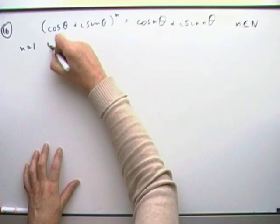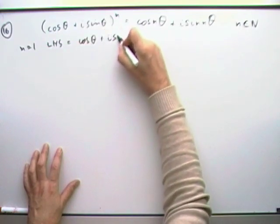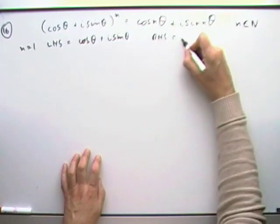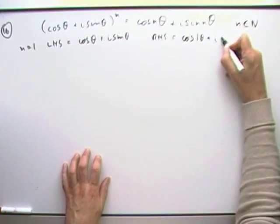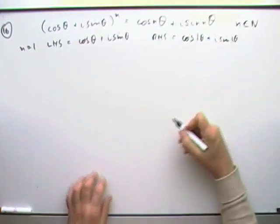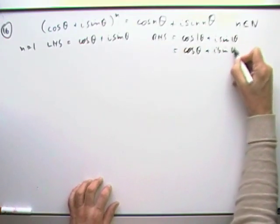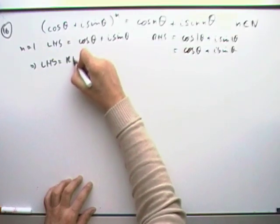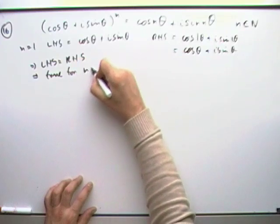So what happens at n equals 1? Well, the left-hand side would just be cos θ plus i sine θ. The right-hand side would just be cos 1θ plus i sine 1θ, which is just cos θ plus i sine θ, which means the left-hand side is the same as the right-hand side, which means it's true for n equals 1.